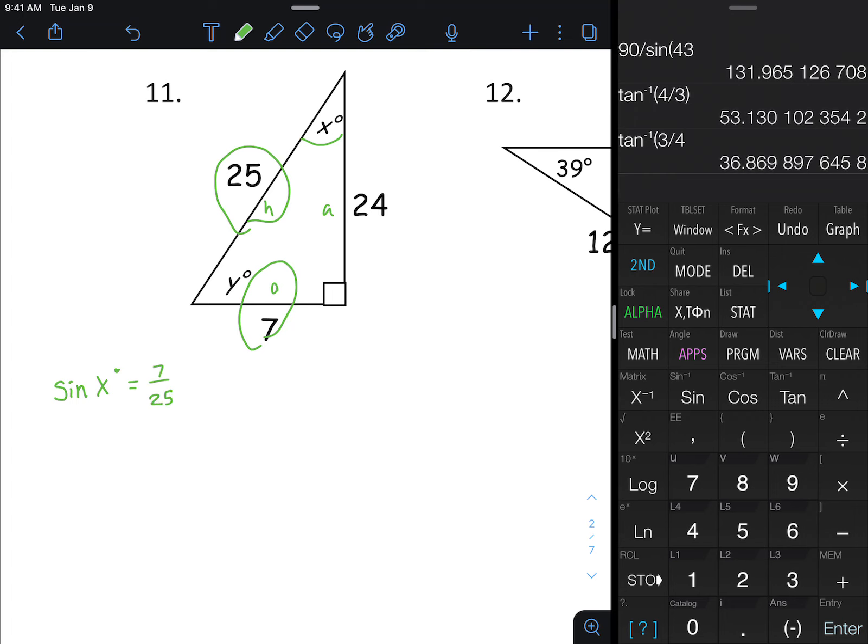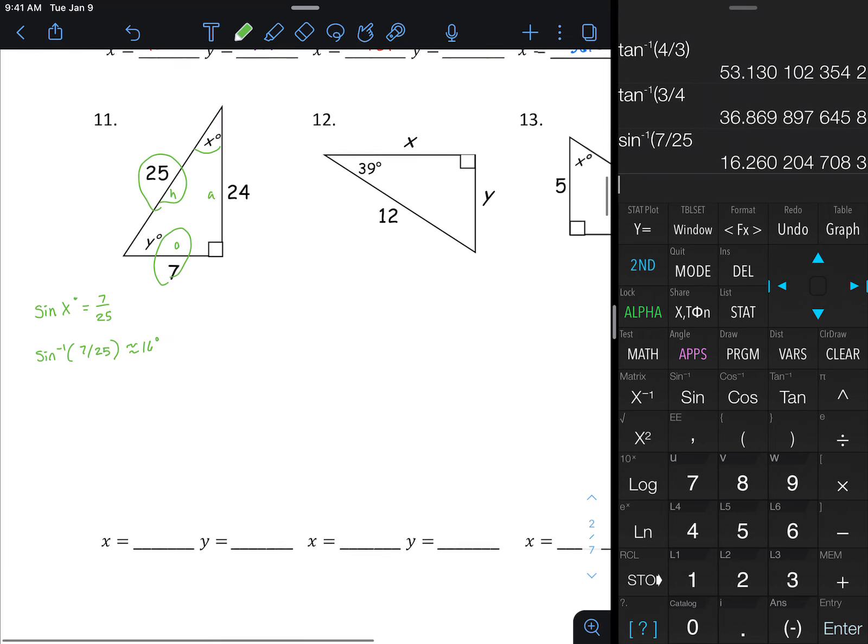Once again, make sure your calculator is in degree mode. To undo or solve for an angle, we use the sine inverse or second sine, so that's second sine 7 over 25, and let's see what that comes out to. Roughly 16.2, or they want to just round to a whole number, so about 16 degrees right there for that first part.